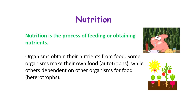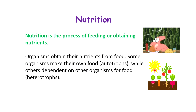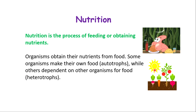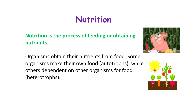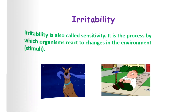Another grouping of organisms depends on other organisms for food — such as us. All food we eat comes from another organism: plants, vegetables, fruits, chicken, pork, beef, and mutton all come from other organisms. Because we depend on other organisms for food, we are called heterotrophs.